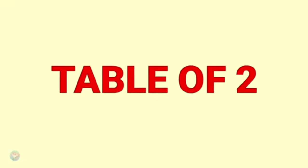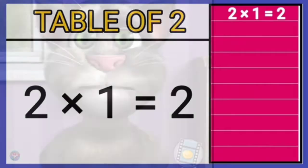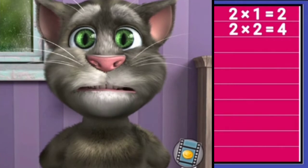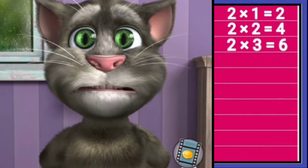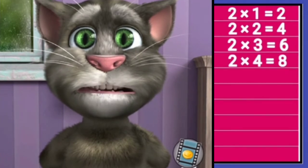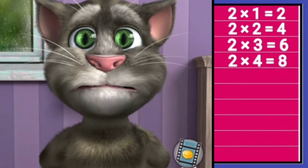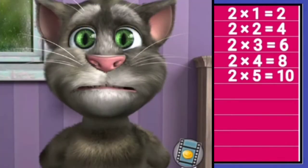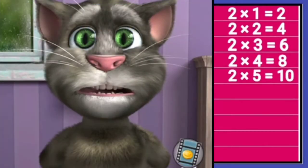Table of two. Two ones are two, two twos are four, two threes are six, two fours are eight, two fives are ten.